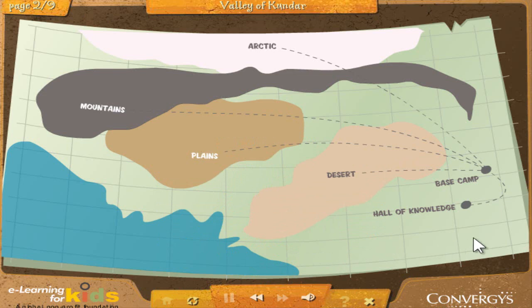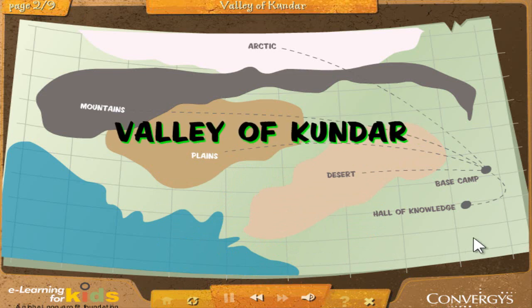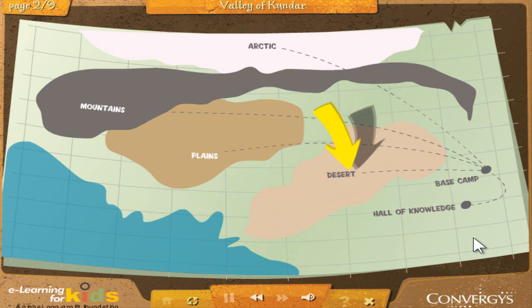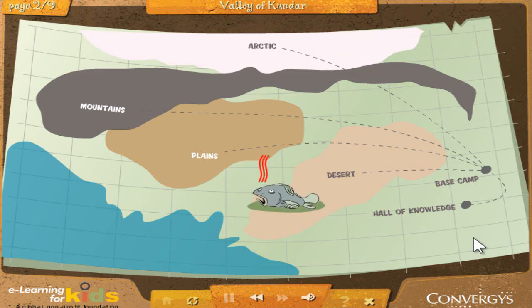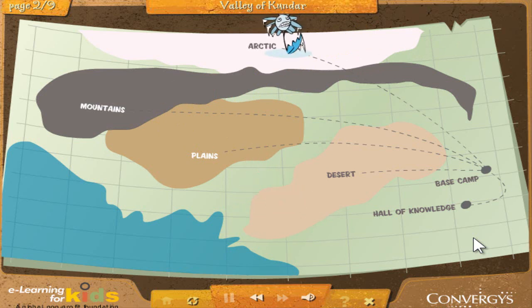You've made it! Welcome to the Valley of Kundar! Like the rest of the world, the valley has all different kinds of environments for you to make discoveries. You can find fossils in the desert, in the mountains, in the plains, and in the Arctic. Because the earth and the valley looked very different millions of years ago, it's sometimes possible to find fossils in strange places. For example, you can sometimes find fish fossils in the desert, far from the ocean, or plant fossils in the Arctic where nothing at all grows. You may even have fossils in your own backyard!